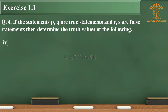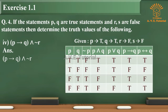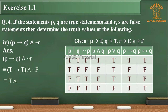Sub-question 4: (P implies Q) and negation of R. Answer: Given P is true, Q is true, R is false, S is false. This is equivalent to (T implies T) and negation of F, which is equivalent to T and T, which is equivalent to T.